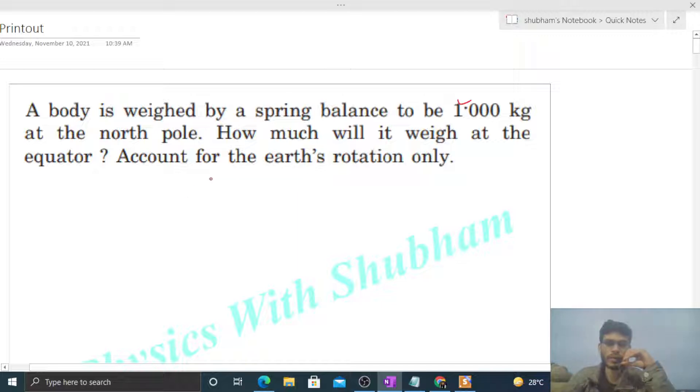So we have to consider Earth's rotation. This is the Earth of radius capital R. It will be a perfect sphere, right? We'll consider rotation, so we'll take Earth's shape as a perfect sphere. And this is the axis about which Earth rotates with some angular speed omega.